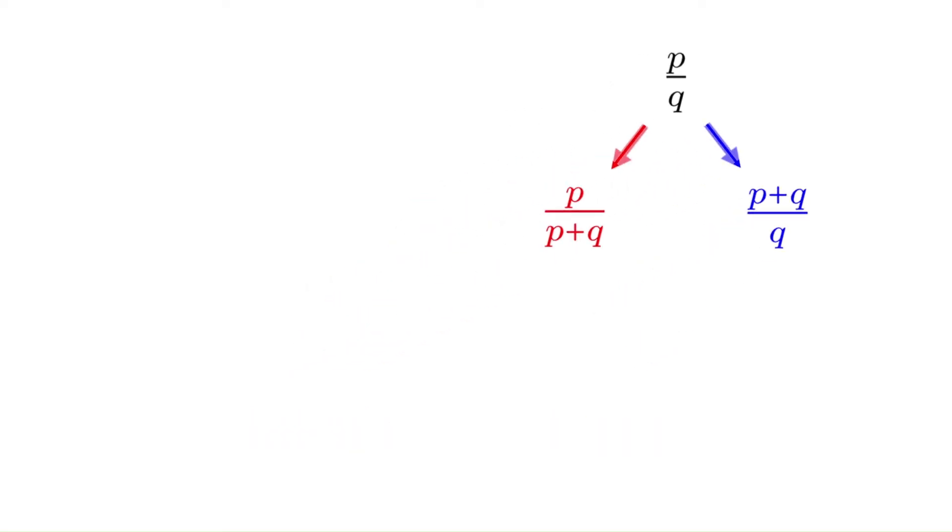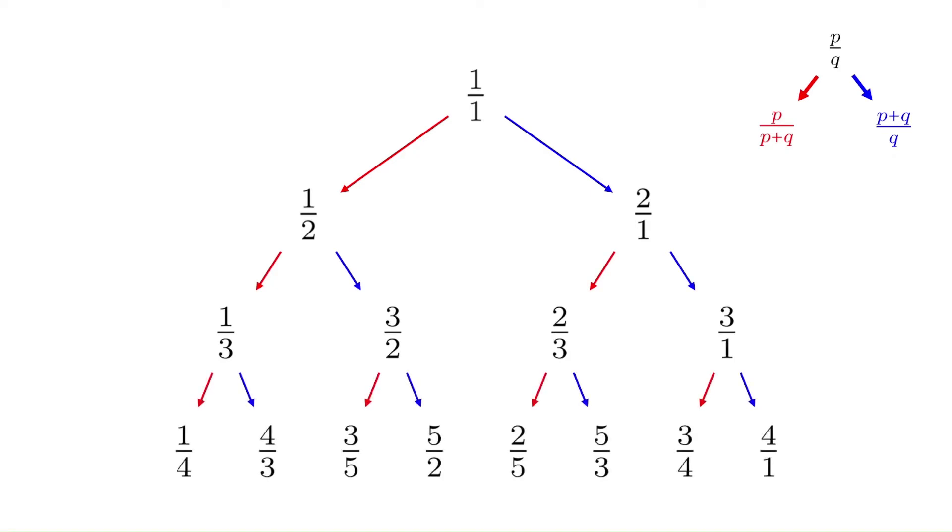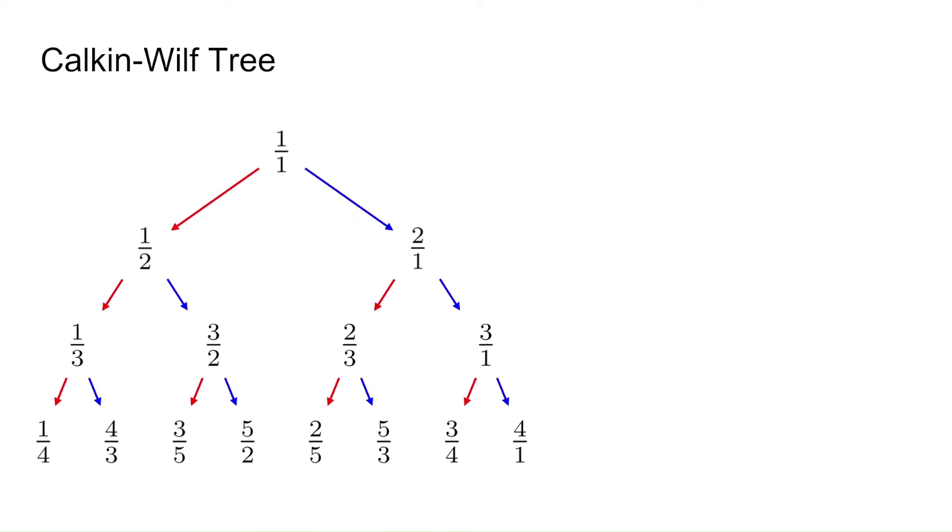Let's see what happens when we perform these operations on the fraction 1 over 1. From the left rule, we get 1 over 1 plus 1, which is 1 half, and from the right rule, we get 2 over 1. We can apply the rules again to make more fractions, and so on. This structure is called the Calkin-Wilf tree, and it has two special properties.